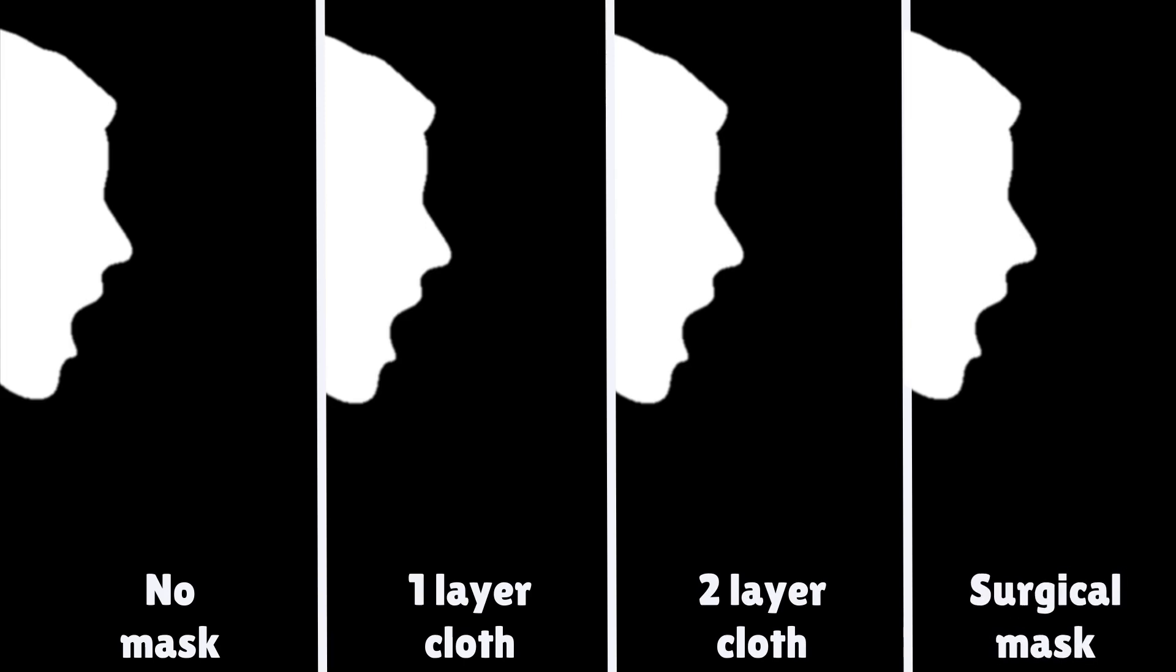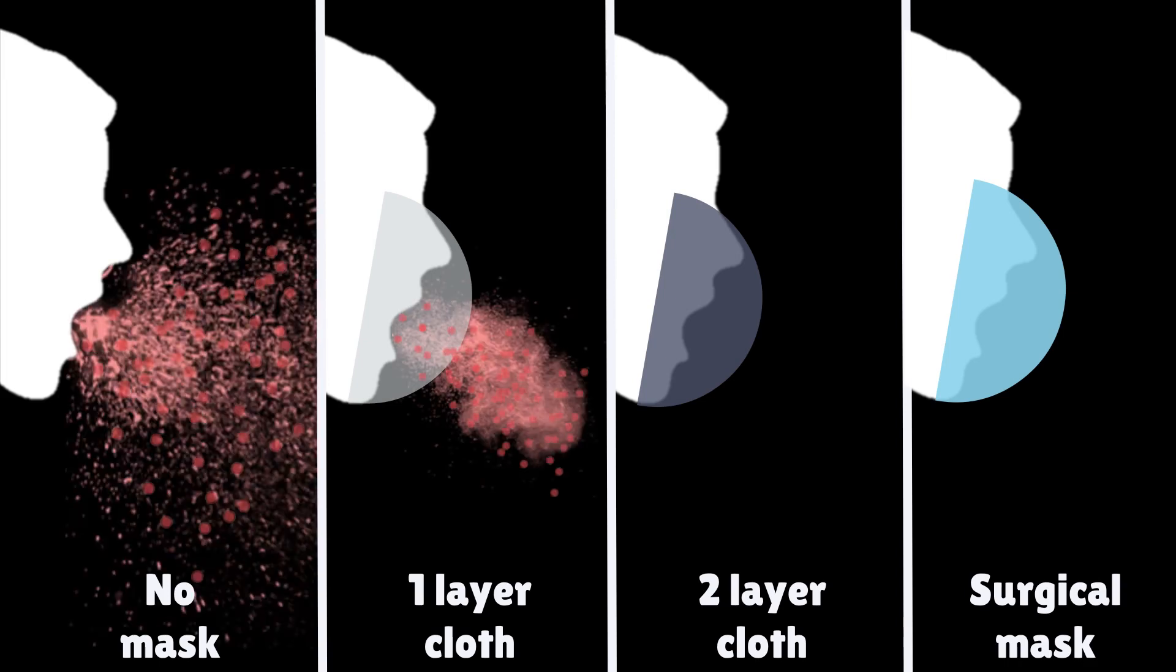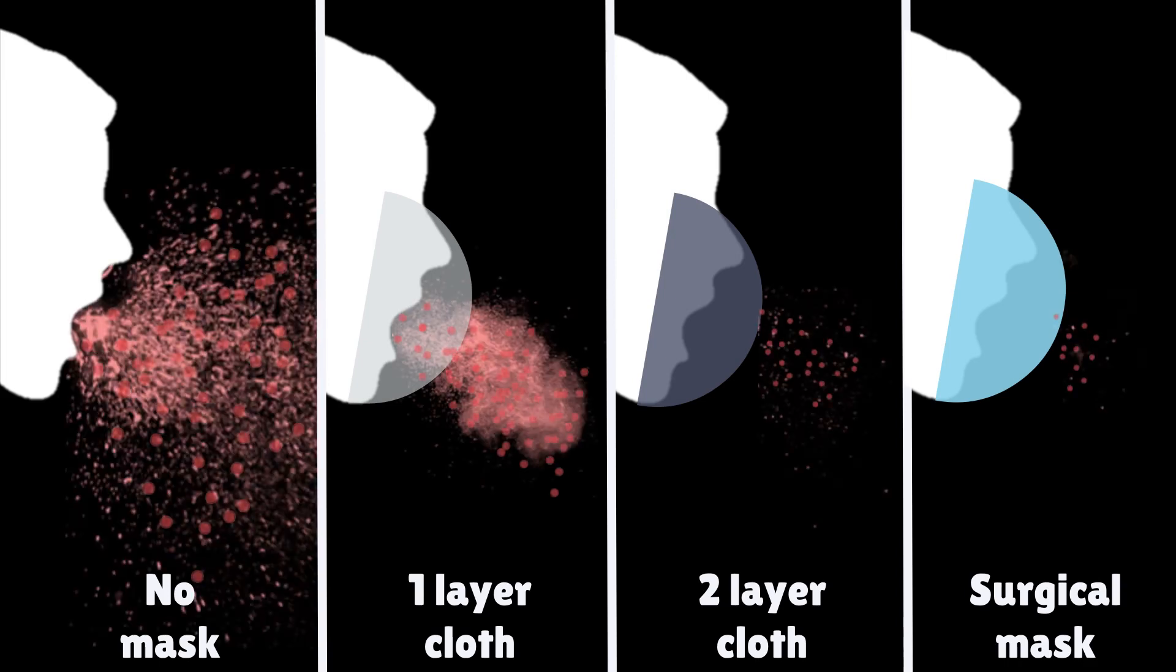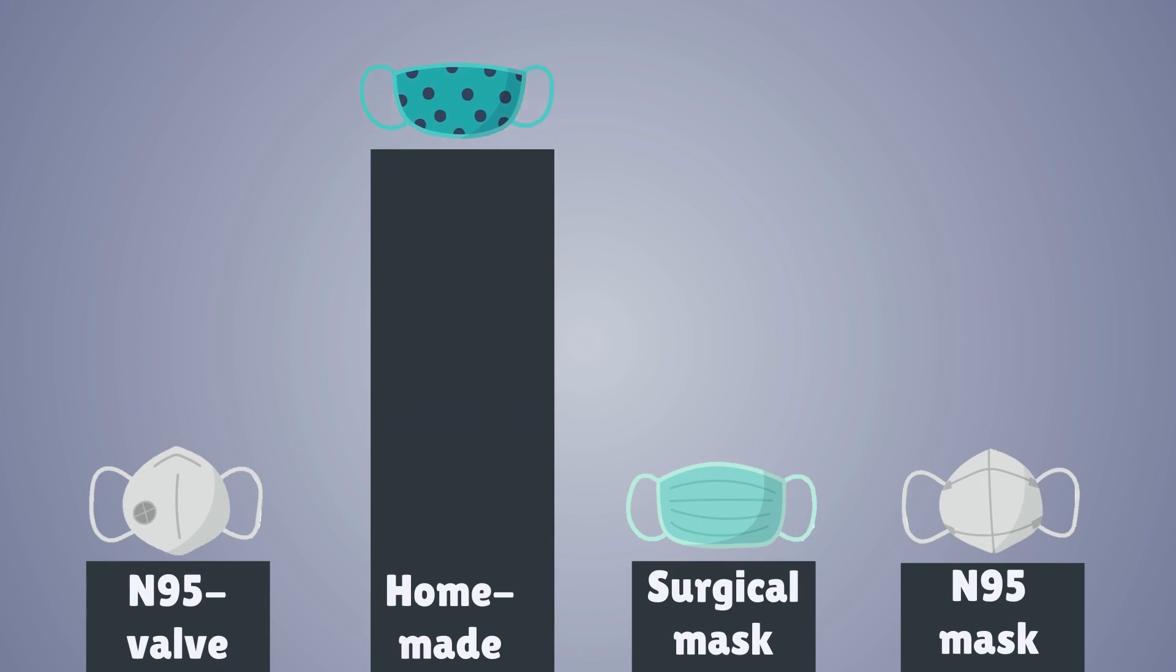The researchers found that many of these dispersions were blocked when a mouth covering of some form was used. A three-layered surgical mask was significantly better than either a one- or two-layered cloth mask. The current recommendations for homemade masks are that it should be at least three layers of thickness, tightly woven, and a cotton or cotton mixed material to provide better filtration systems.